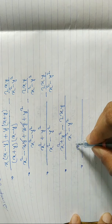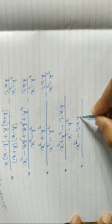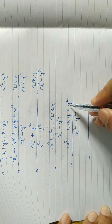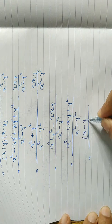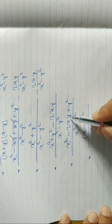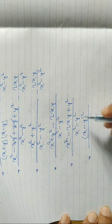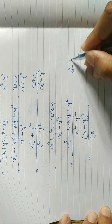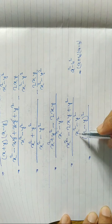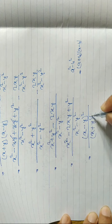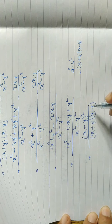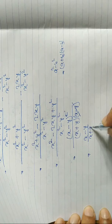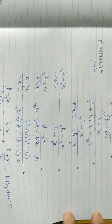We write x square minus 2xy plus y square in the numerator, by x square minus y square. The numerator is in the form a square minus 2ab plus b square, which is the formula for (a minus b) whole square, so we write (x minus y) whole square. The denominator x square minus y square is in the form a square minus b square equals (a plus b)(a minus b), so we write (x plus y)(x minus y). Then (x minus y) cancels, leaving the final answer: (x minus y) by (x plus y).